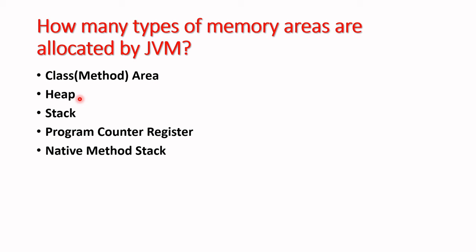Heap memory is very important for the JVM because in Java everything is an object. The heap contains the runtime data area — all object memory will be allocated here. Whatever data is required for an object at runtime will be in heap memory. If your heap runs out of memory, the JVM will stop and your program will not run.